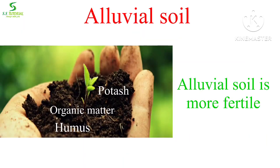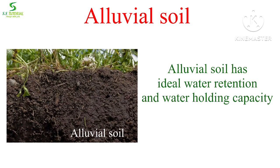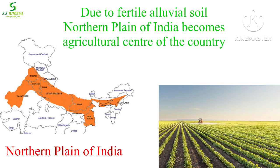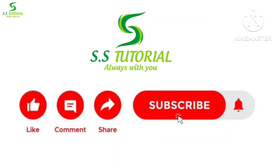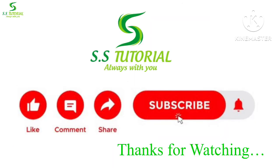Khadar is made of fine-grained alluvium; it is sandy in nature and light in color. In Punjab it is known as 'Bet.' Alluvial soil is much more fertile as it is rich in humus and organic matter, and also rich in potash. It has good water retention and water-absorbing capacity. That's why the Northern Plain of India has become the agricultural hub of the country.